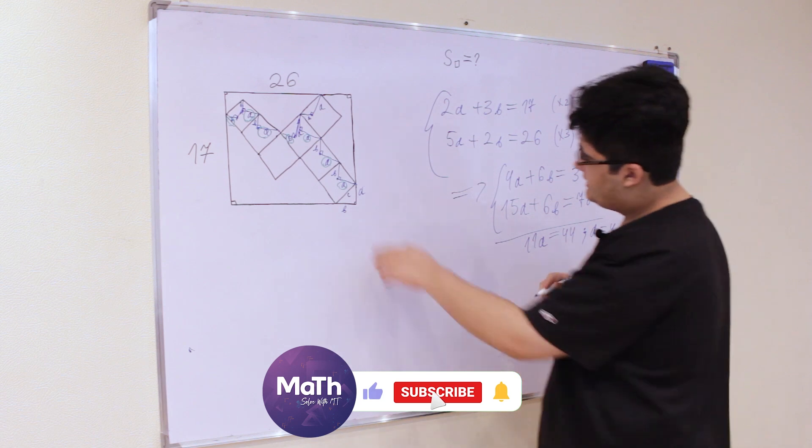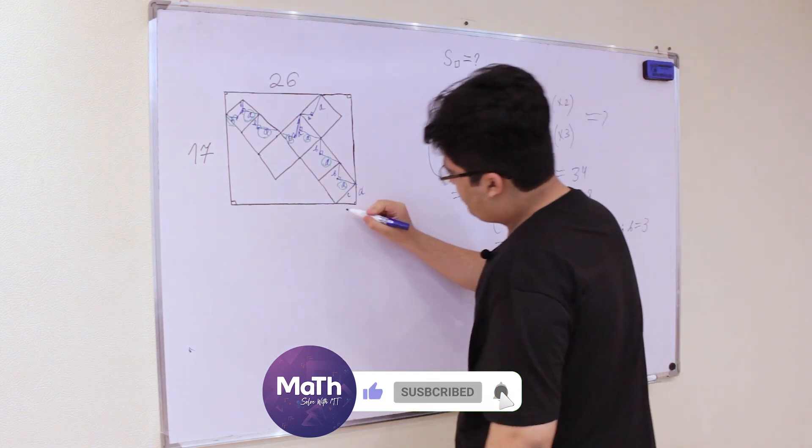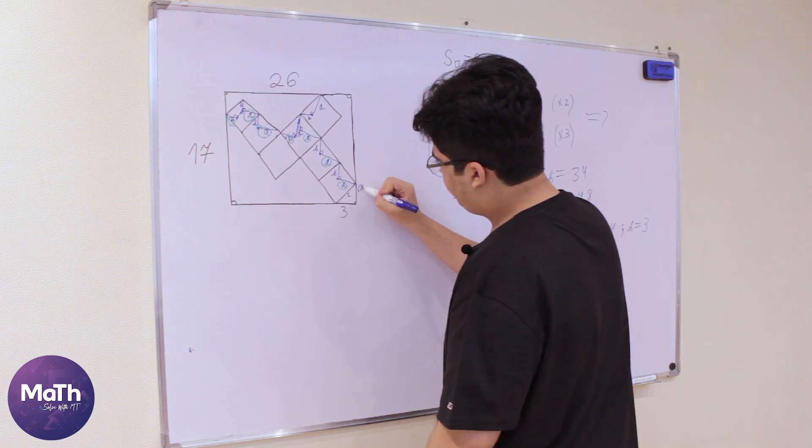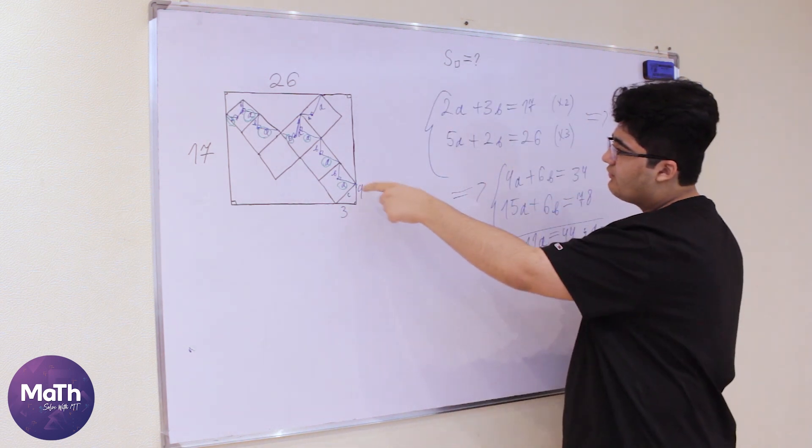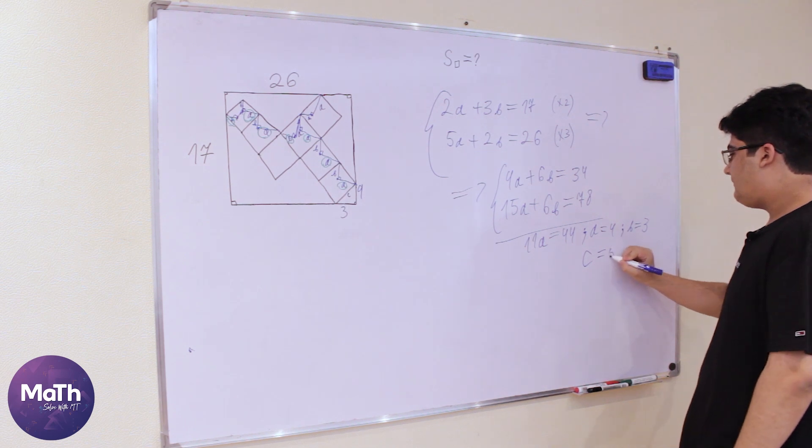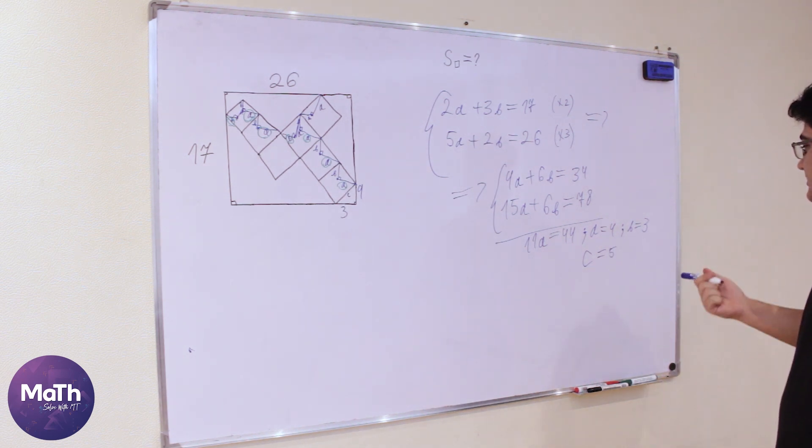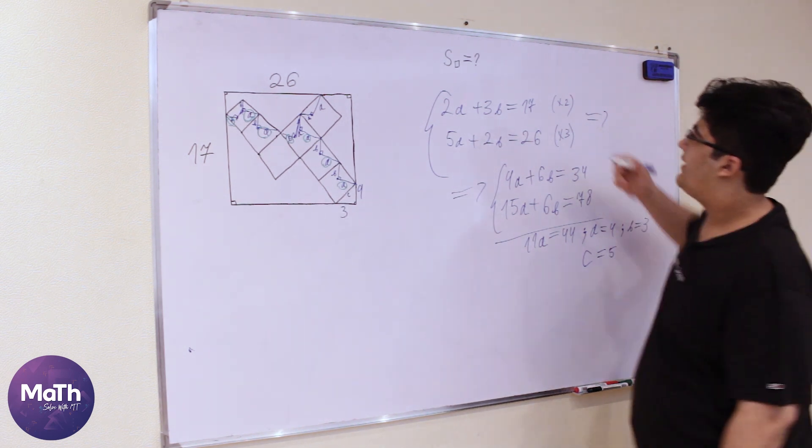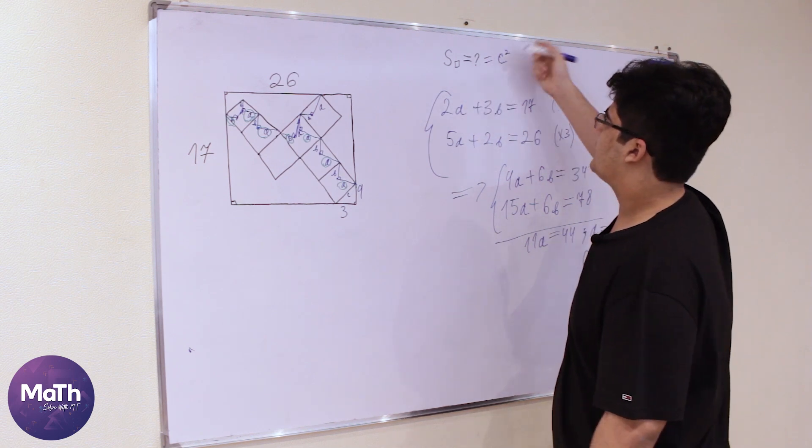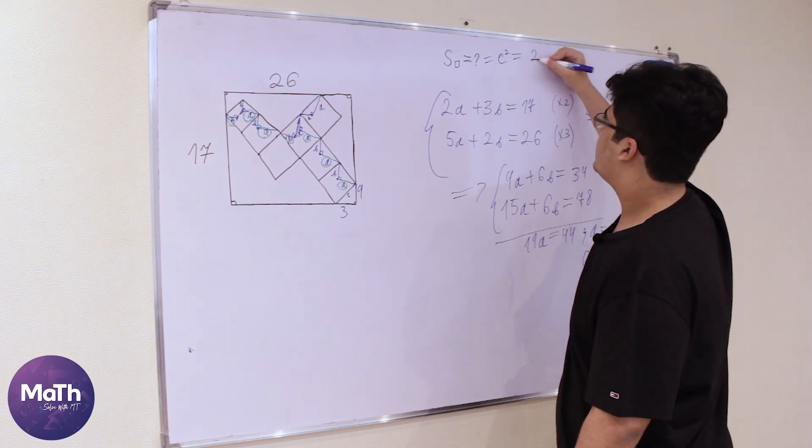And if b is equal to 3 and a is equal to 4, then we have 3-4-5, so c will be equal to 5. And c is the side of the square, so this will be equal to c squared and this is 25.